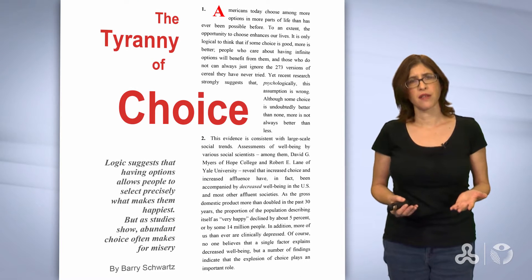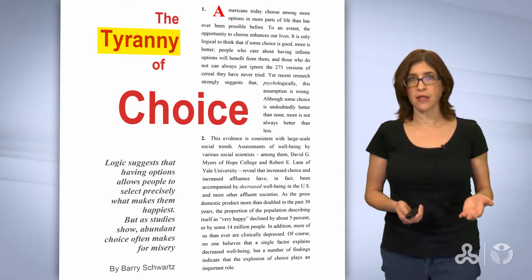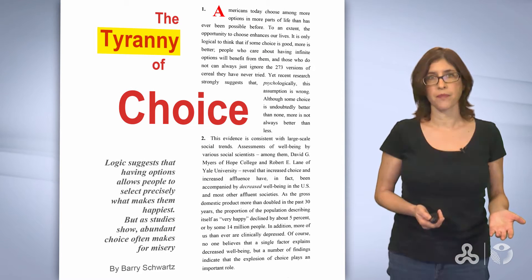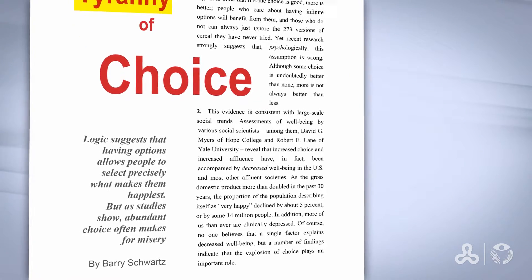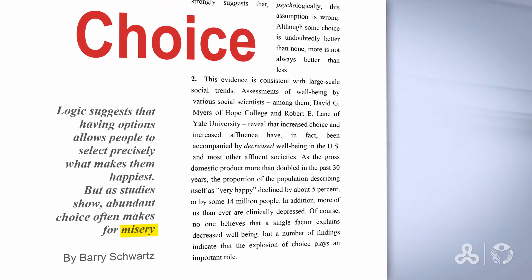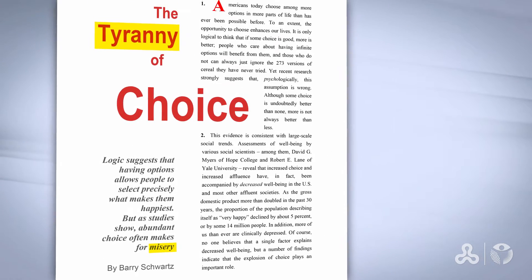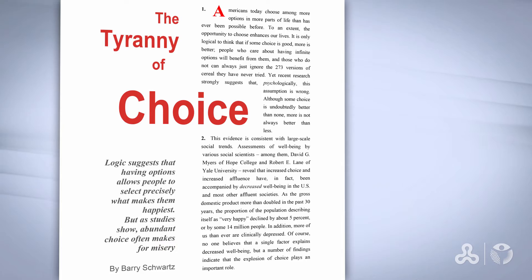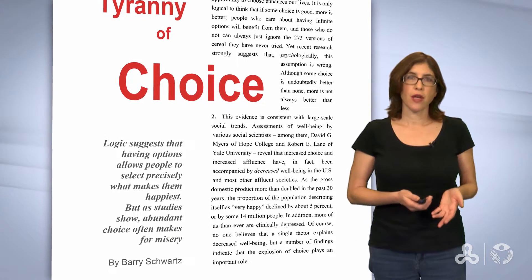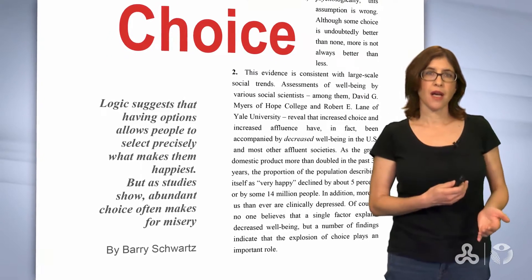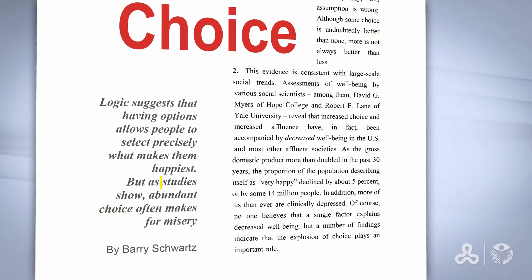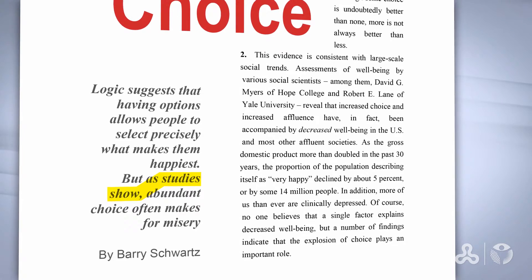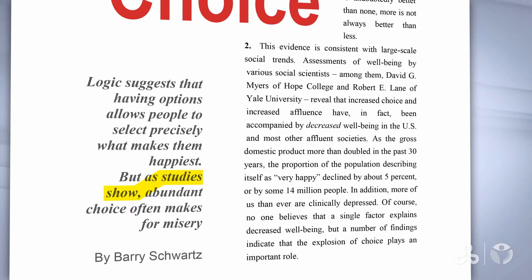How does this connect to the title? The writer uses the word 'tyranny' in the title, and right after that, he uses the word 'misery' in the sentence under the title. It seems that the writer has a negative opinion about abundant choice. We can also see that the writer is going to base his opinion on evidence — notice the words 'studies show.' So we are going to read about research studies on this topic.